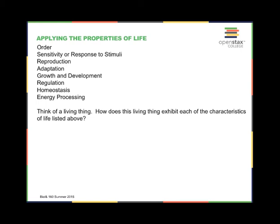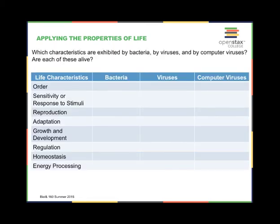Now, select a living thing — like your pet, or a house plant, or a bird flitting around in your garden — and describe how this living thing exhibits each of those eight characteristics. Also, do some research to determine which of the eight characteristics apply to bacteria, viruses, and computer viruses. If you can complete these activities without referring to the earlier slides or the textbook — if you're fluent enough with the terminology and concepts — then you're ready to go on to Chapter 1, Video 2: Taxonomy and Phylogenetics. Thanks, I'll see you in the next one.